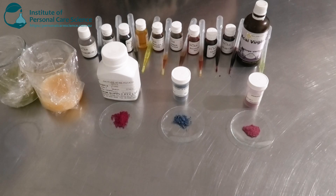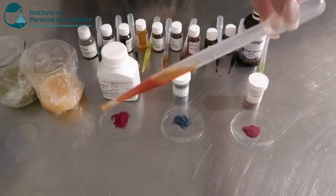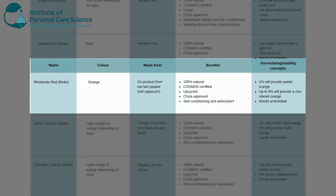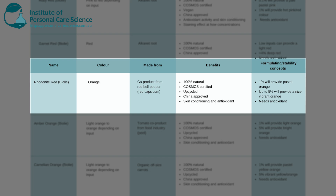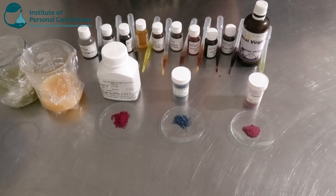My next one is the Rhodonite Red. As you can see, this is a lighter shade of red — almost a little bit orange as well. This is by Biola and is a co-product from Red Bell Pepper — red capsicums in Australia — making it an upcycled ingredient. It's 100% natural, Cosmos certified, China approved, and has skin conditioning and antioxidant benefits. Looking at the color chart: 1% in an emulsion provides a pastel light orange, and 5% provides a nice vibrant orange. You will need to use more of this to get a more solid color.